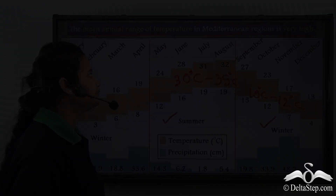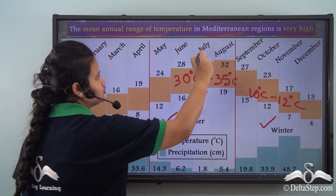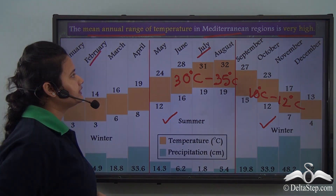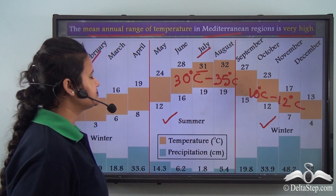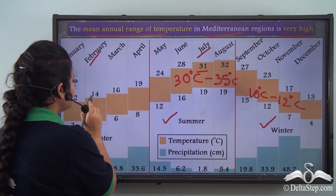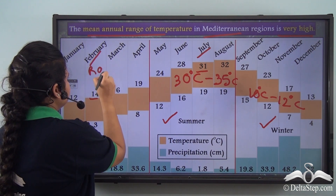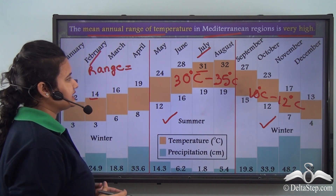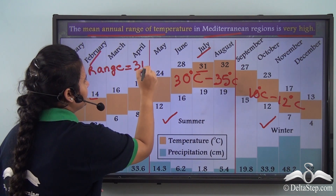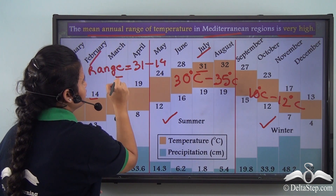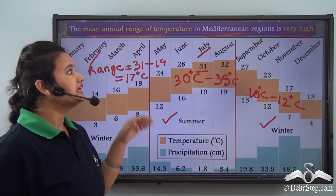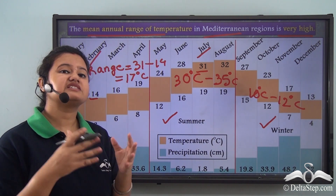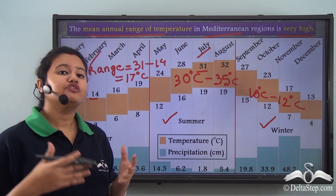The mean annual range of temperature implies wide variation in the maximum and minimum temperatures of summer and winter months. Let us calculate the range of temperature for summer and winter months. Let us select a summer month, say July, and a winter month, say February. In the month of July, the maximum temperature is about 31 degree Celsius. Whereas in the month of February, the maximum temperature is 14 degree Celsius. So the range of temperature — that is, the difference between maximum and minimum — will be 31 minus 14, which is equal to 17 degree Celsius. Thus the mean annual range of temperature in the Mediterranean regions is indeed very high, usually ranging from 10 to 15 degree Celsius.